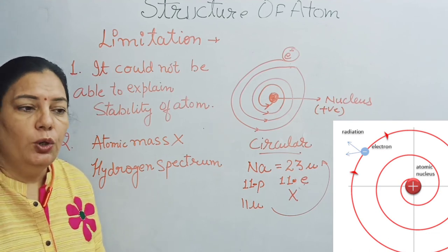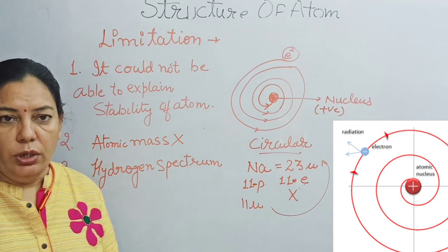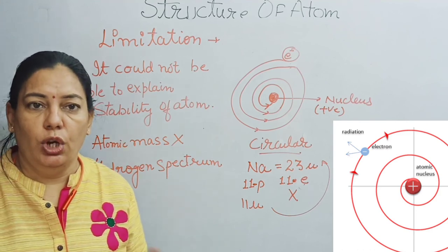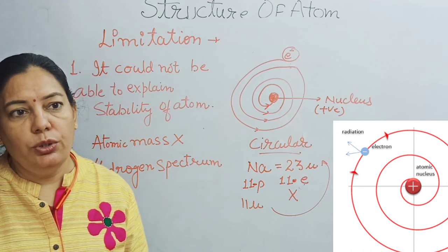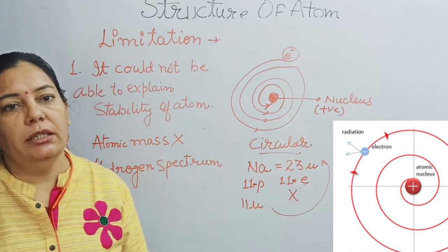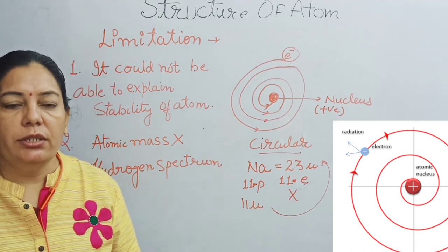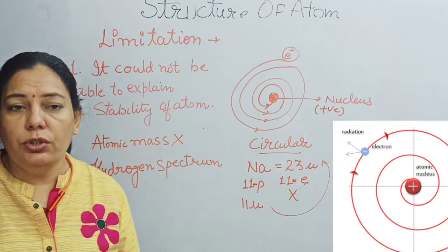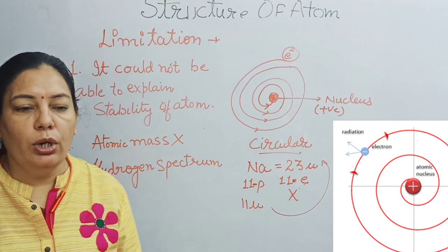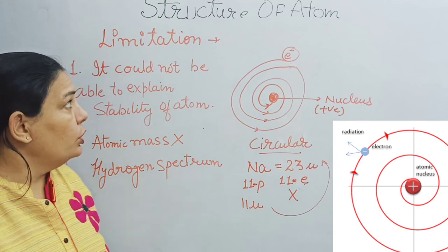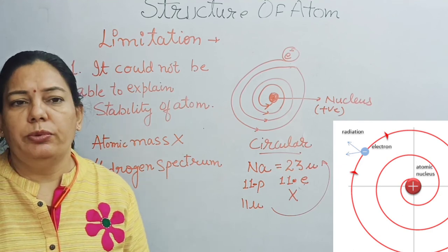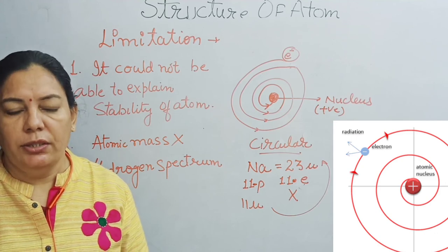From this point, a new scientist — Neil Bohr — proposed a new model known as Neil Bohr's model. The limitations of Rutherford's model are: it could not explain the stability of the atom, it could not give a proper explanation of atomic mass, and it could not explain the hydrogen spectrum. I hope this concept of Thomson's model and Rutherford's model is clear. If you have any doubts, write in the comment box. In our next video, we will discuss Neil Bohr's model, isotopes, and more.